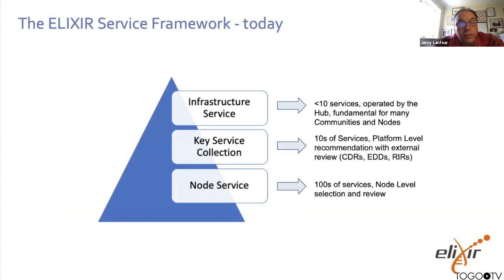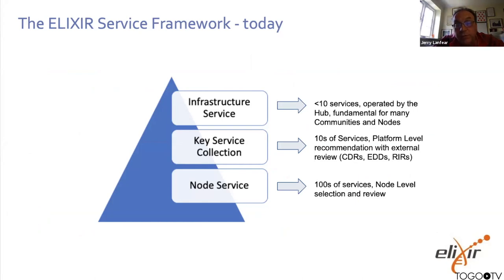We organise those services in a hierarchy. Our node services run into the hundreds — selected and reviewed at the node level. Some of those form part of our key service collections: our core data resources, deposition databases, and recommended interoperability resources. A few services form what we call an ELIXIR infrastructure service, operated by the hub and regarded as fundamental for many communities.